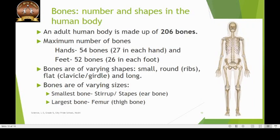The maximum number of bones in the human body are found in the region of the hands and the feet. Each hand has 27 bones and each foot has 26 bones. Hence, the hands have a total of 54 bones and the feet have a total of 52 bones, which is the highest in any part of the human body.